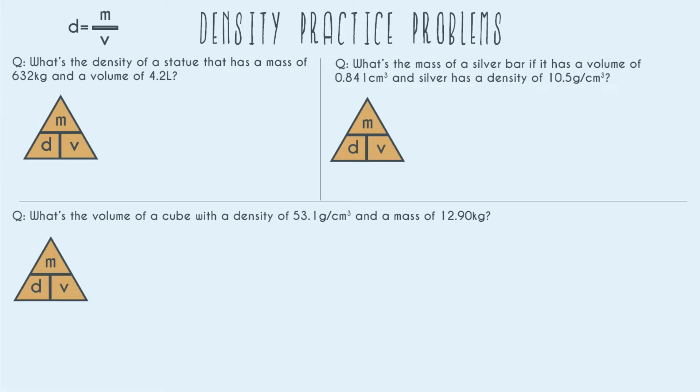And so our formula is D equals M over V and let's go ahead and solve this first problem. So we're using density, mass, and volume.